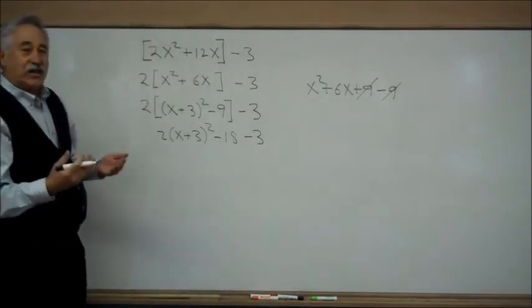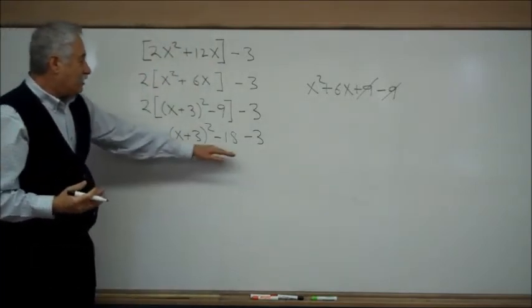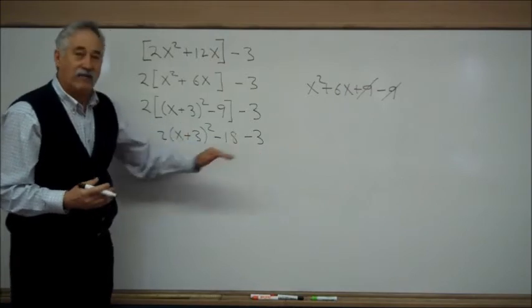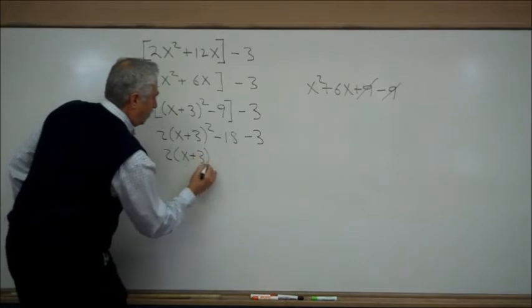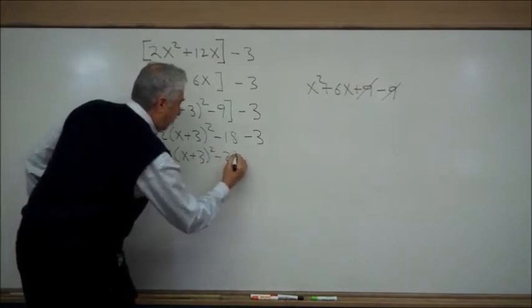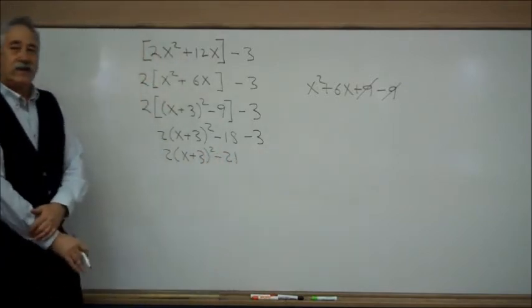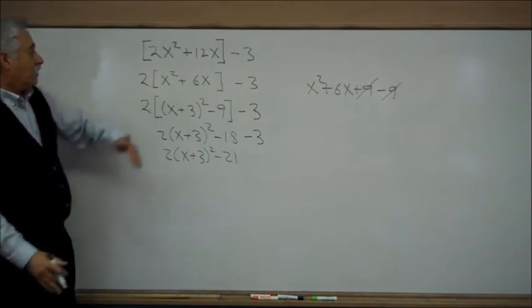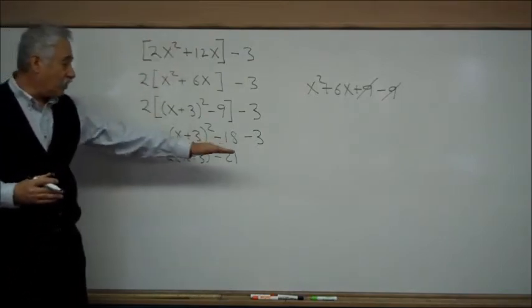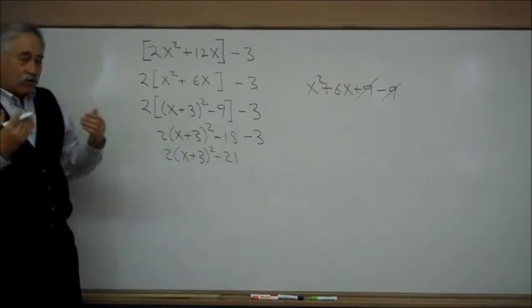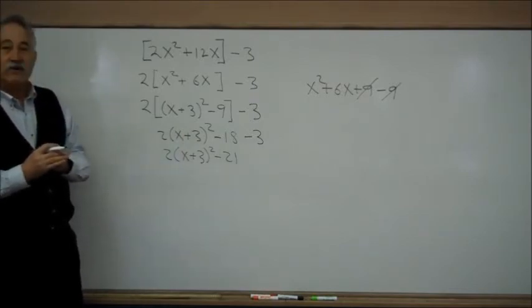The last clean up step is here with the minus 18 and the minus 3. We combine like terms. And we are done. We have completed the square from the original expression, and we've done so without the need for an equal sign or crossing an equal sign for any reason whatsoever.